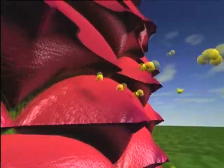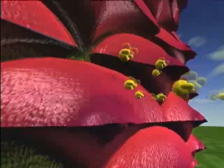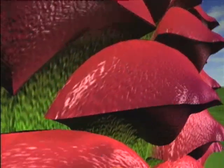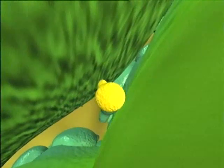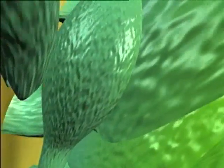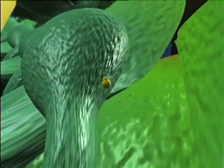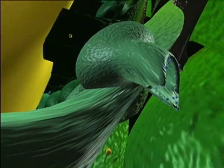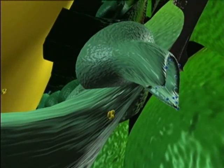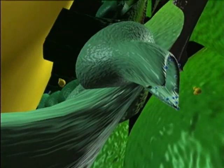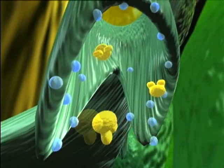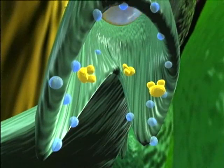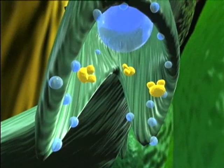Carried by air currents, some pollen grains are forced between the ovuliferous scales and fall down towards the ovules. Some of the pollen grains adhere to the sticky surface of the micropylar arms.